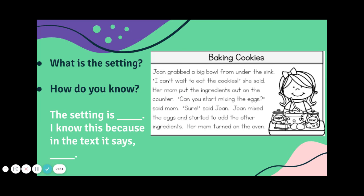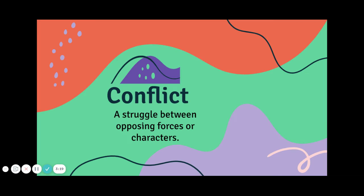So let's read this and think about what the setting is. Joan grabbed a big bowl from under the sink. "I can't wait to eat the cookies," she said. Her mom put the ingredients out on the counter. "Can you start mixing the eggs?" said Mom. "Sure," said Joan. Joan mixed the eggs and started to add the other ingredients. Her mom turned on the oven. So think about it — where and when would this story take place? It's definitely in a kitchen — they're baking. It's got to be during the day or present day, and we know they're probably not baking at night.